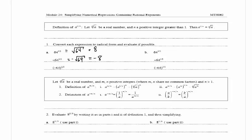In the last one we have negative 64 in parentheses raised to the 1 half, which means the negative sign is inside the square root. So we have the square root of negative 64, and this is not real — we can't evaluate it.